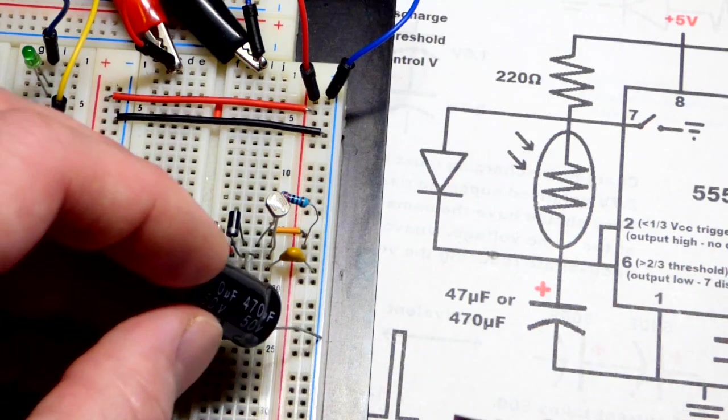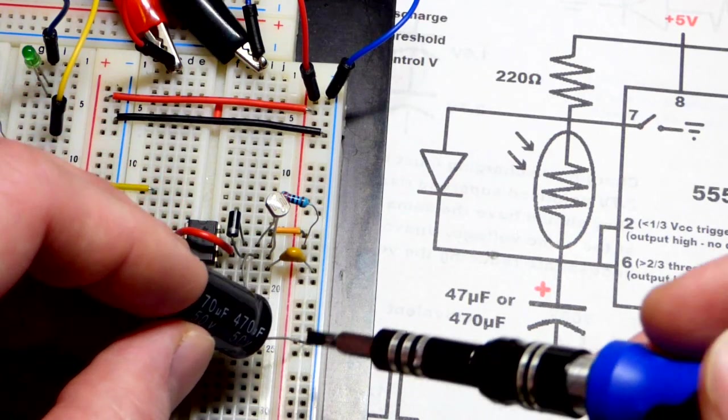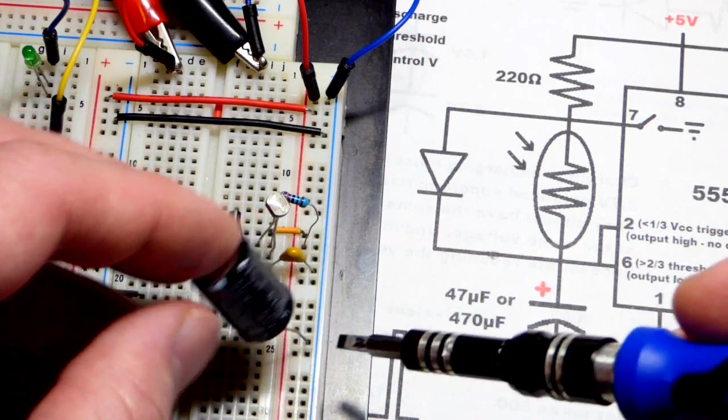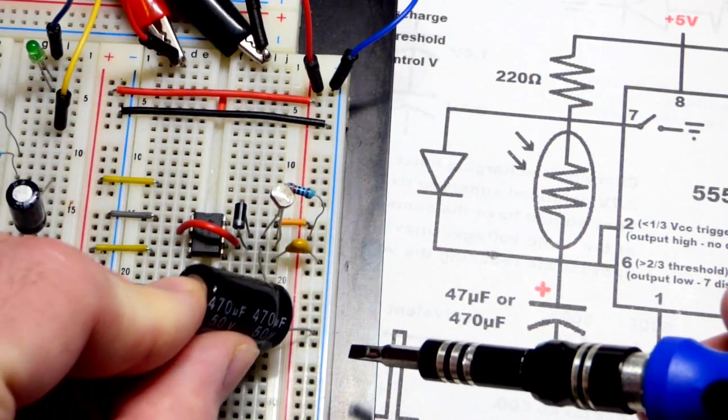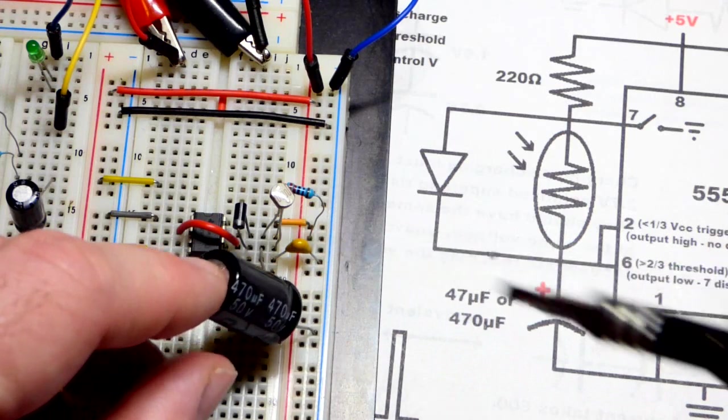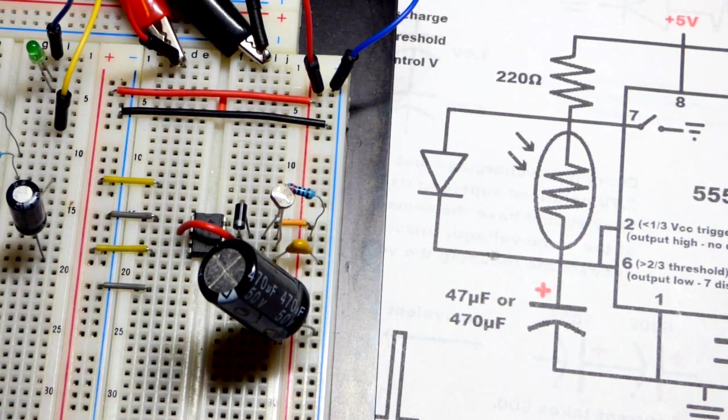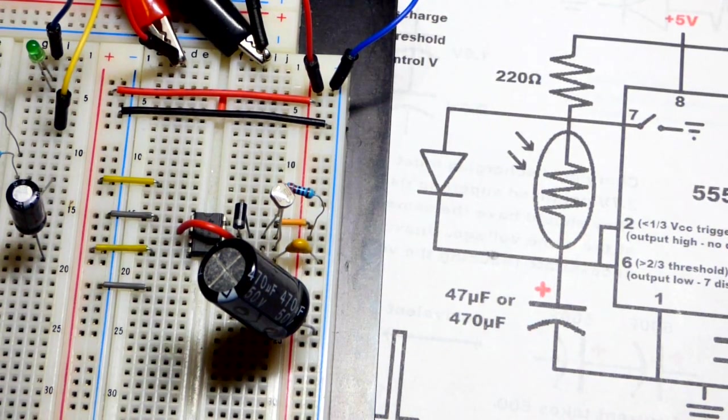So we're going to put the positive side, where the light dependent resistor and the cathode right there, pin number six, the threshold pin. And so again, it's electrolytic, got 470 microfarad, and so the more negative side, the side with the dash is going to go there. And I'll just kind of bend it out of the way, so we can see a little bit there. So really, that's it for this circuit.